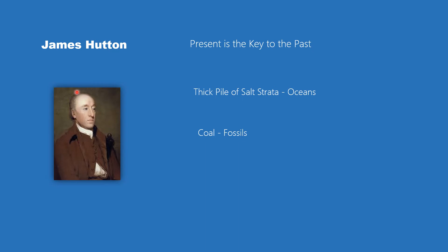James Hutton was a Scottish geologist, physician, chemical manufacturer, and naturalist, and is also known as the father of geology. According to him, the Earth was much older, and processes occurring in the present were the same processes that had operated in the past and would be the processes that operate in the future. This concept helped in resolving many critical problems of Earth science.